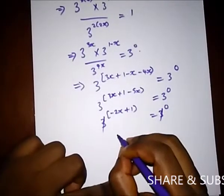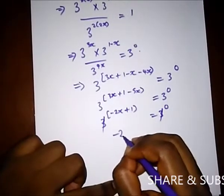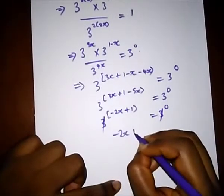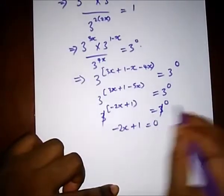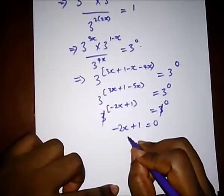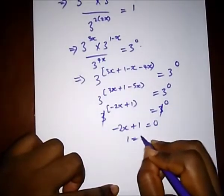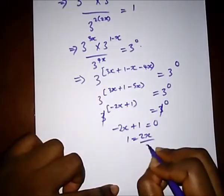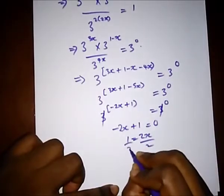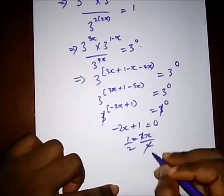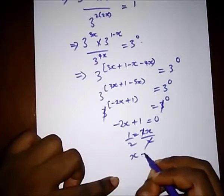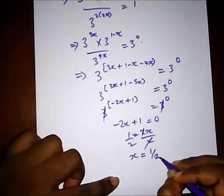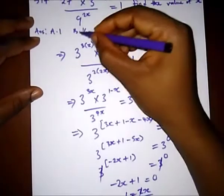Since the bases are equal, the exponents must be equal, so minus 2x plus 1 equals 0. Taking minus 2x to the other side we have 1 equals 2x; dividing both sides by 2 we are left with x equals 1 over 2. Our correct option is option B.